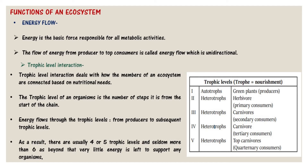The trophic level of an organism is the position it occupies in the food web. A food chain is a succession of organisms that eat other organisms and may in turn be eaten themselves. Energy flows through the trophic levels from producers to subsequent levels. There are usually four or five trophic levels. In a diagram: autotrophs (green plants) are producers; heterotrophs — herbivores — are primary consumers; carnivores are secondary consumers; then tertiary consumers; and top carnivores are quaternary consumers.